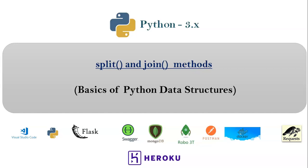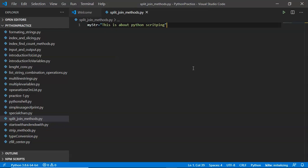Here I will be talking about split and join methods, and these two methods are very important to implement real-time scripts. The split method will produce output as a list by taking input as a string, and the join method will produce output as a string by taking input as a list. I will discuss the basics about these two methods, and while writing real-time scripts we will see their usage in detail.